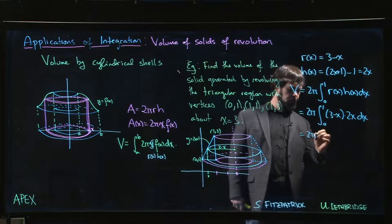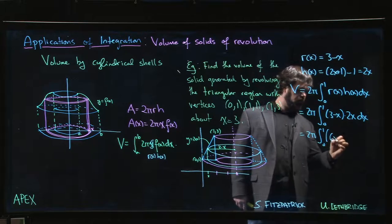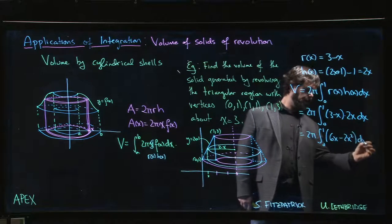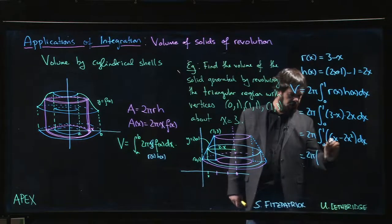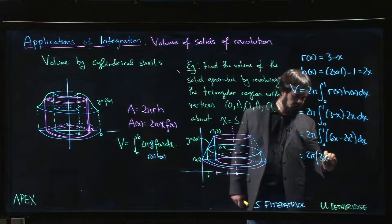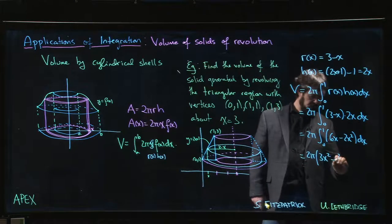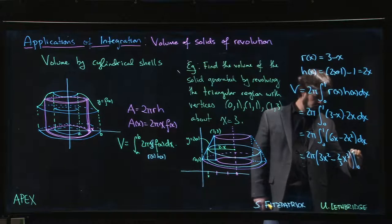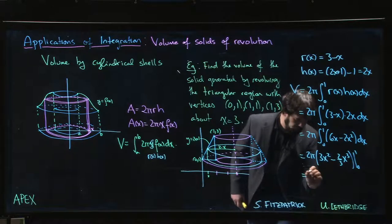So we get 2 pi integral from 0 to 1 of 6x minus 2x squared. It's not so bad. 2 pi times 3x squared minus 2 thirds x cubed. We integrate from 0 to 1. Lower limit does nothing, so we just plug in the upper limit.